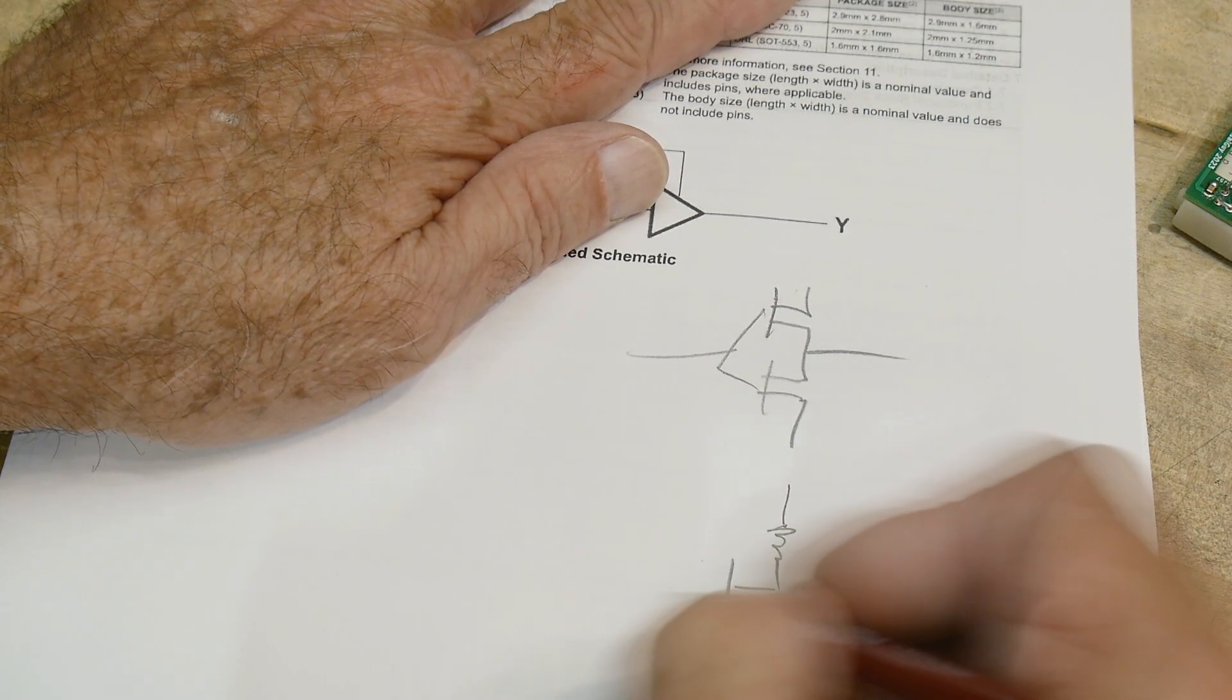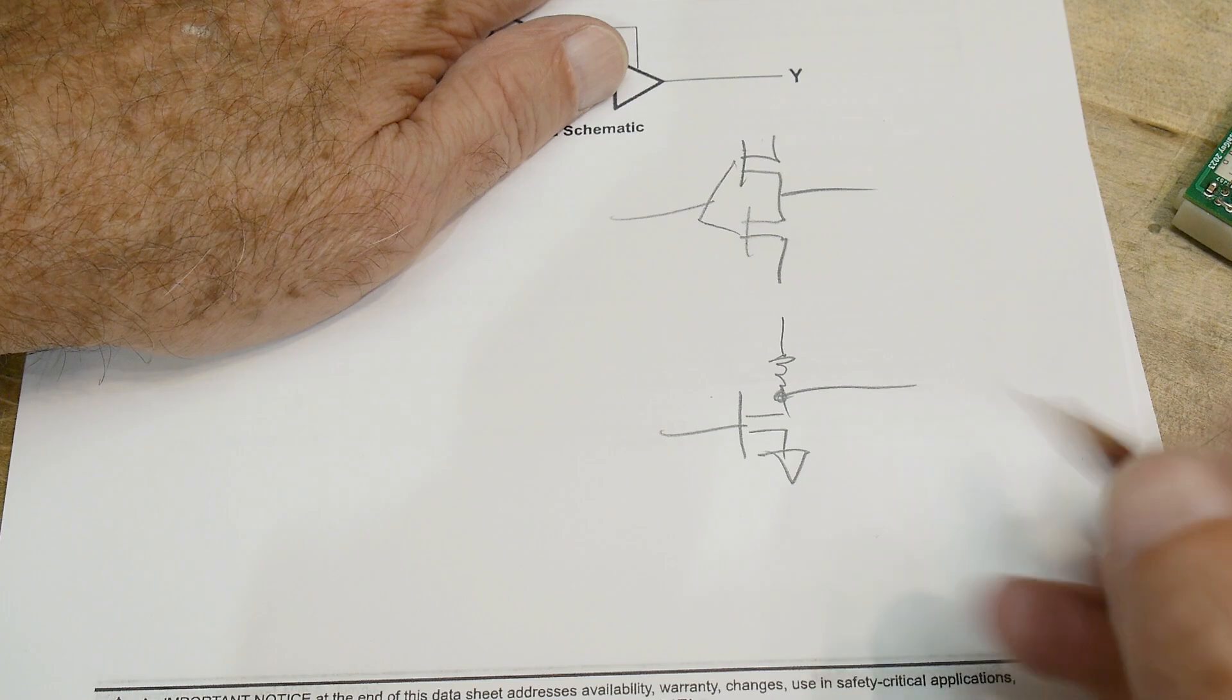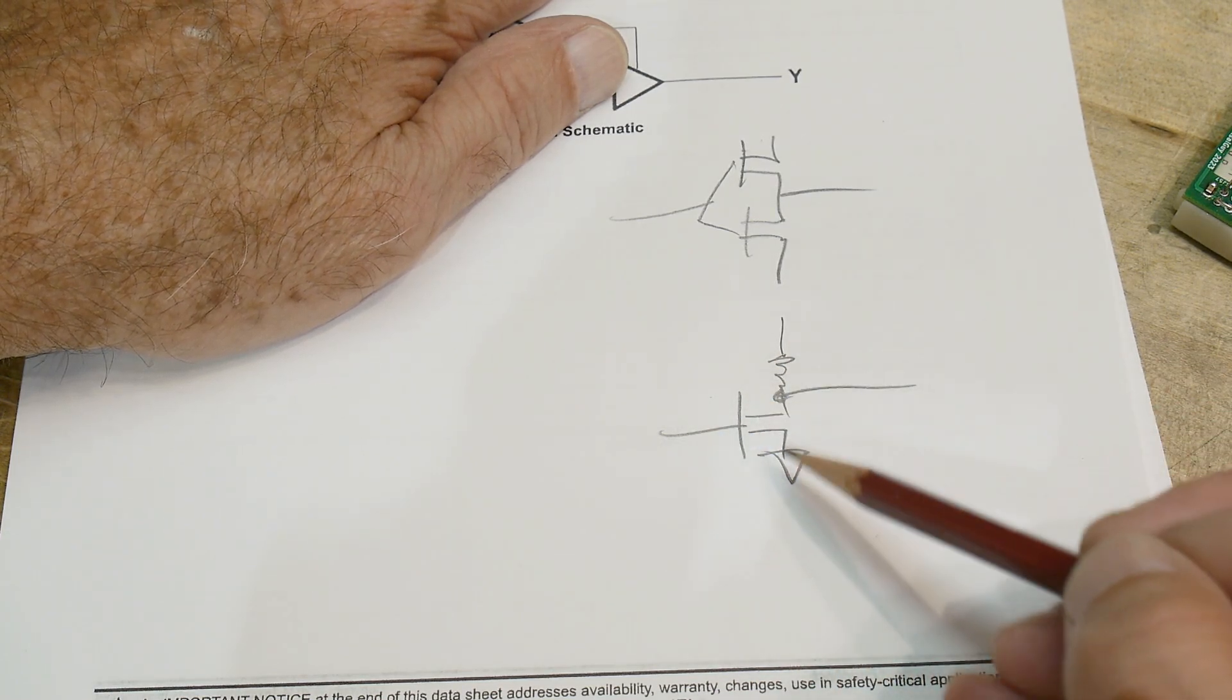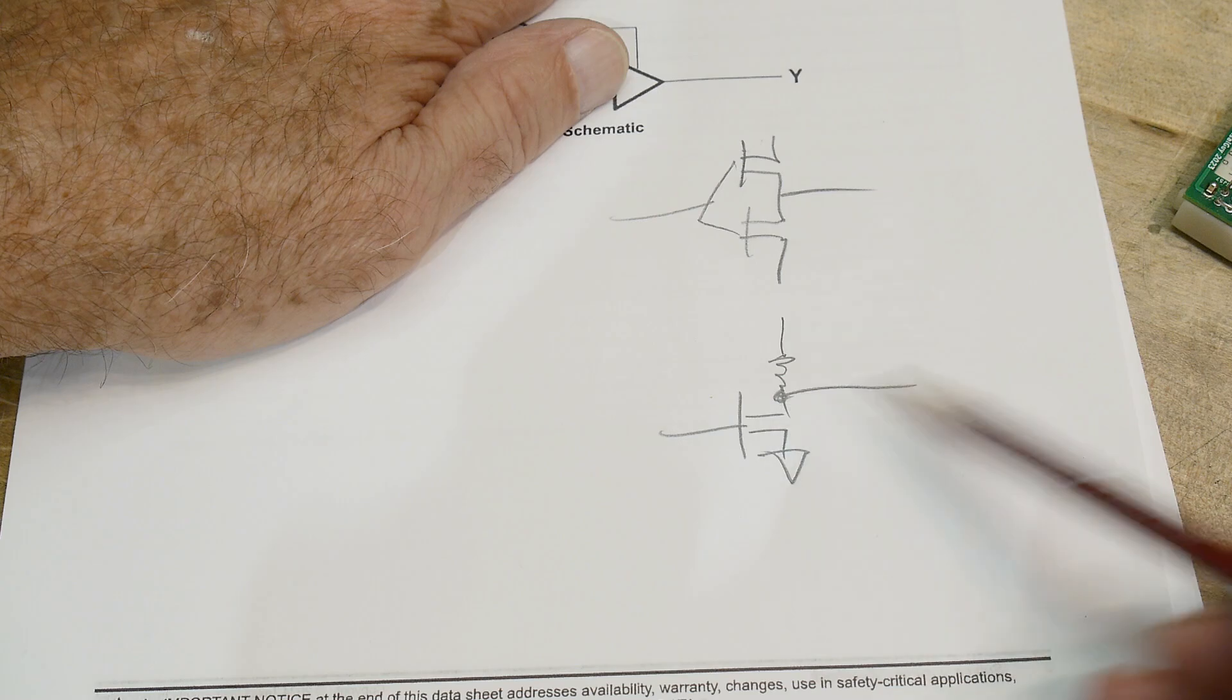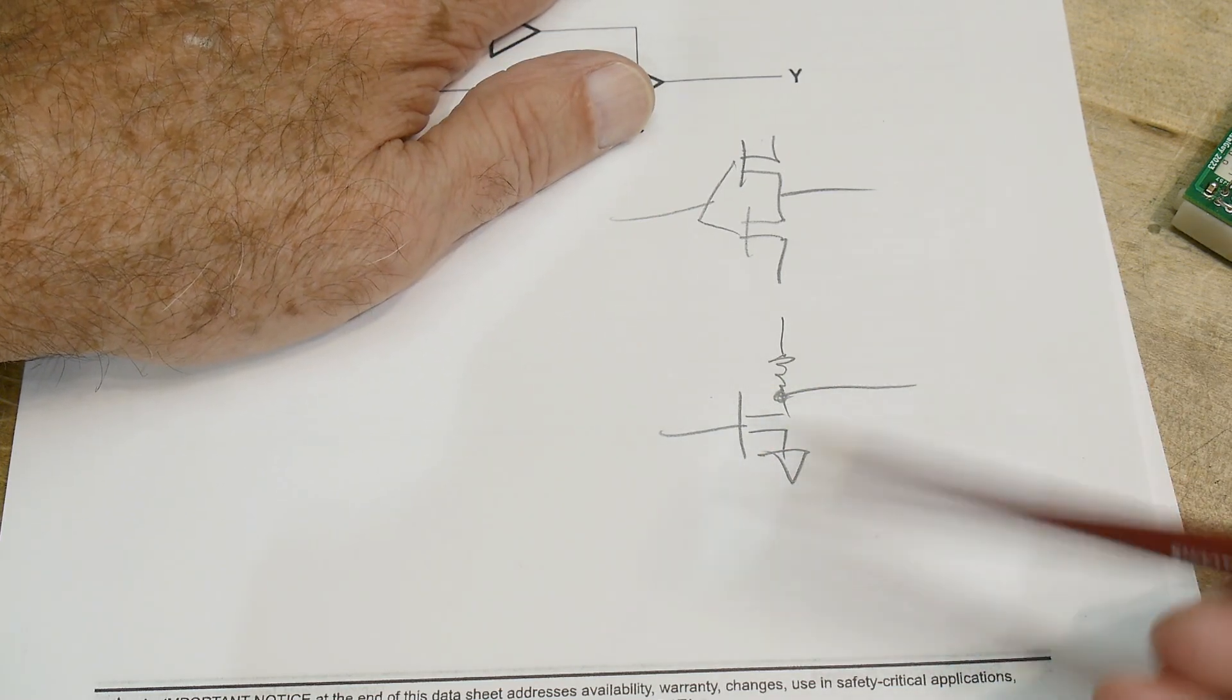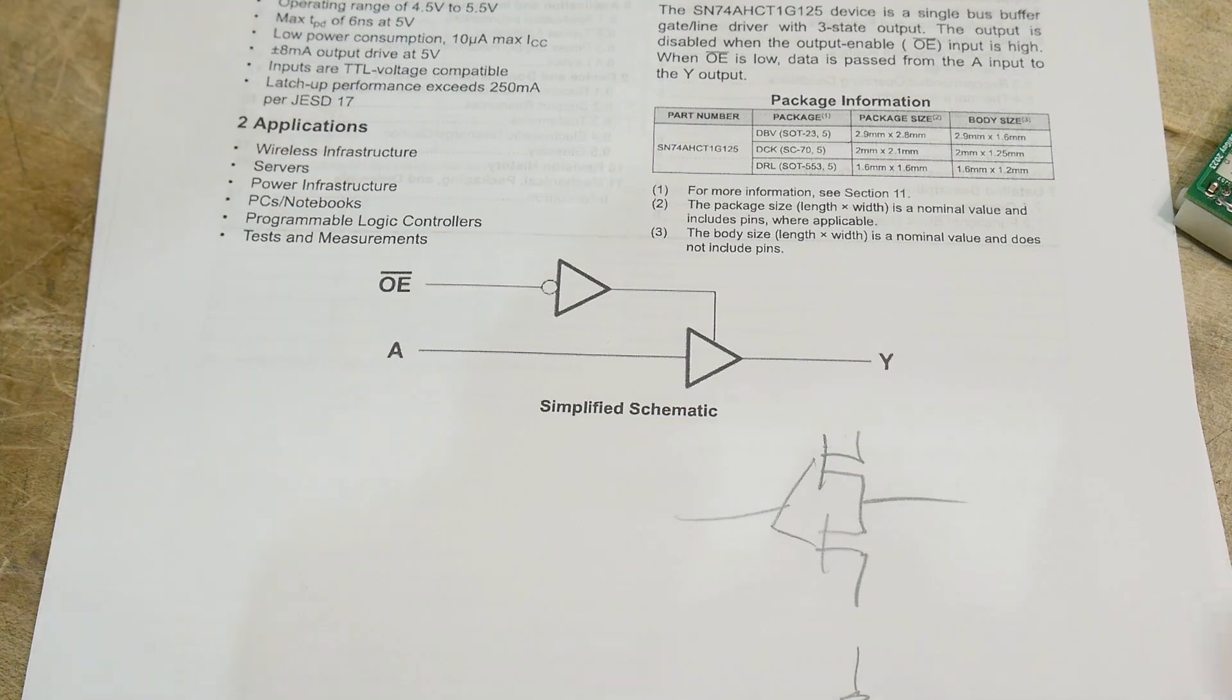A cheapy version of that is open collector or open drain. You might have something like this, and a lot of circuits use this where you can have a whole bunch of people on there and only one person can pull down. Because if two people pull down you don't know who's doing it. But the resistor on the top keeps everybody from blowing up. You do have data collisions here too. Tri-state buffer, let's see it.